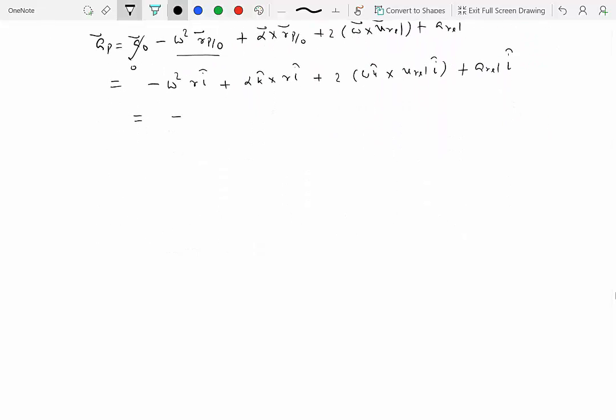Okay so let's collect all the like terms: minus omega square R and then we have A relative i hat so I'll write A relative over here times i hat plus k cross i over here is j so we get alpha R plus k cross i again is j so this is 2 omega V relative times j hat.